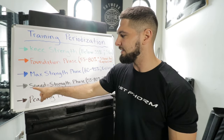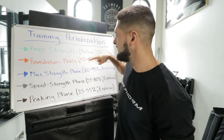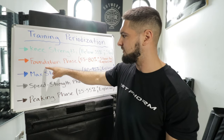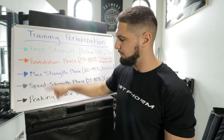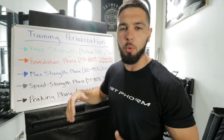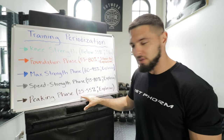Then comes the peaking phase, also four weeks long. To recap the full timeline: the knee strengthening phase is as many weeks as needed; the foundation phase is nine weeks; the max strength phase is nine weeks; the speed strength phase is four weeks; and the peaking phase is four weeks. There are also deload weeks after the foundation phase and after the max strength phase — but not after the speed strength phase. The peaking phase uses 25 to 55% of your one rep max, which is extremely light.